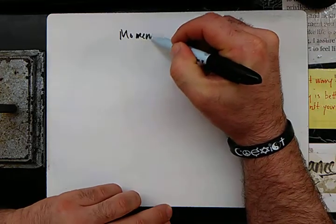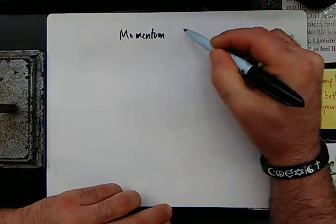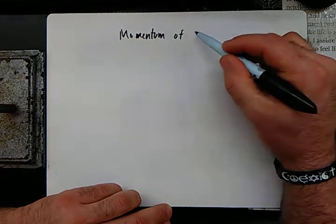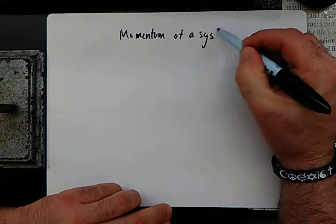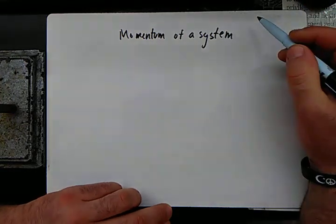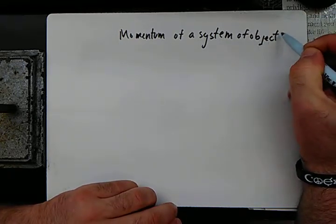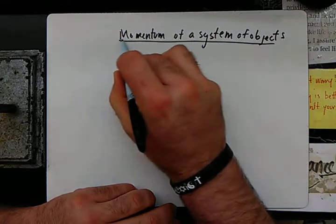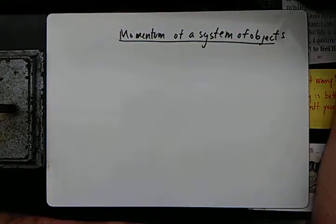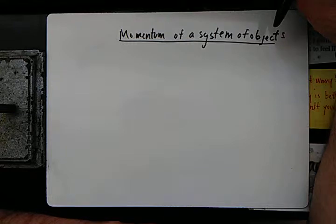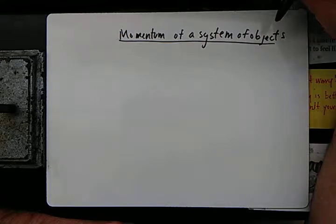of a system of objects. Up until this point we've looked at momentum with one object, but in real life there's more than just one object acting at any particular point in time, and we can add momentum as vectors.